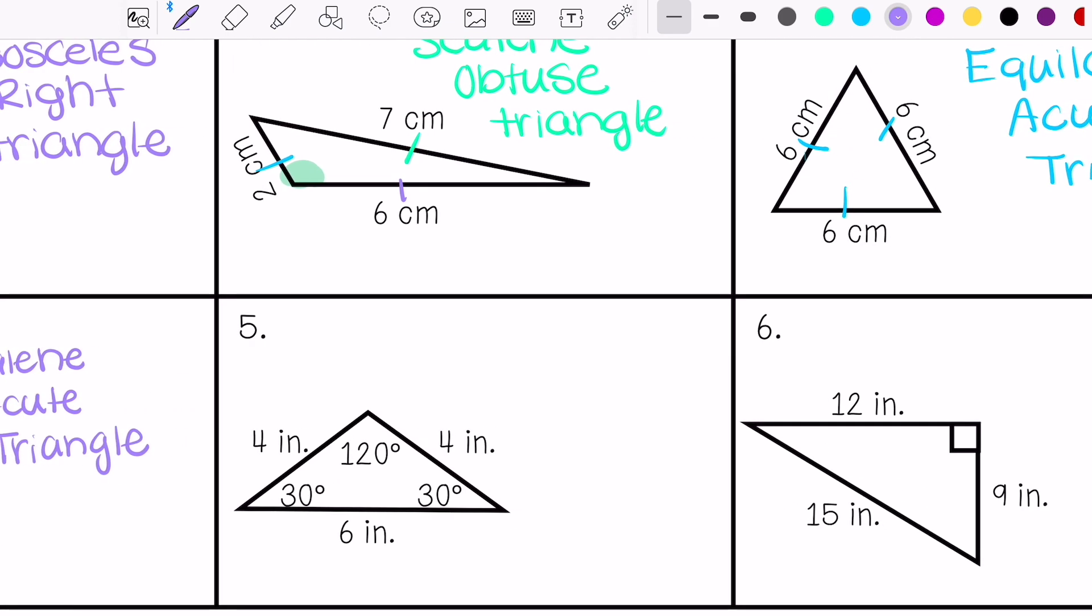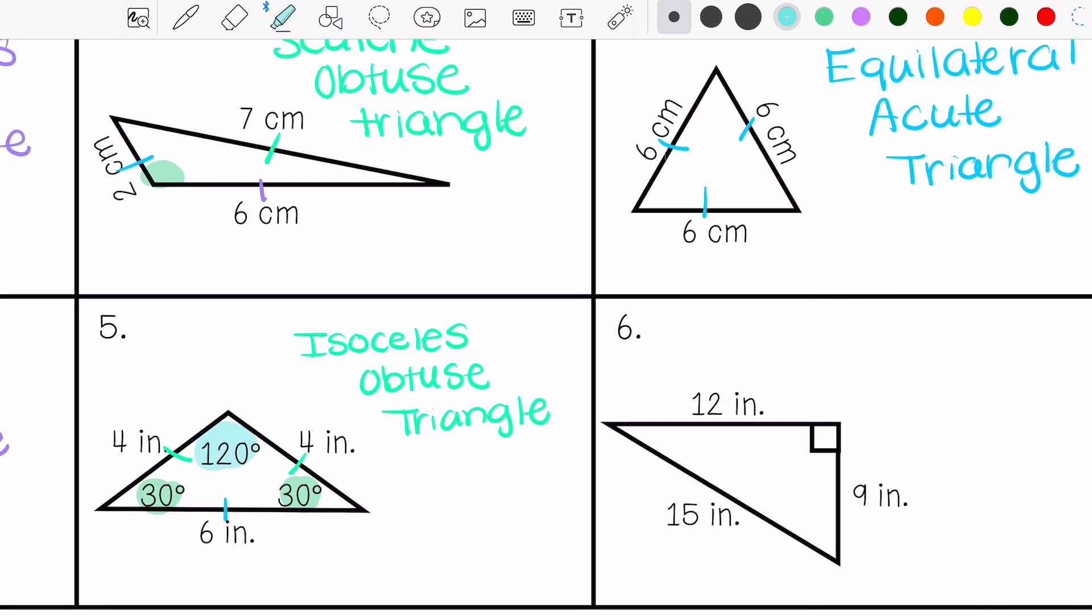Number five, I have two sides that are equal, two angles that are equal, and one obtuse angle. So this is going to be isosceles obtuse. So these two that are the same, this one's different, and it's obtuse.